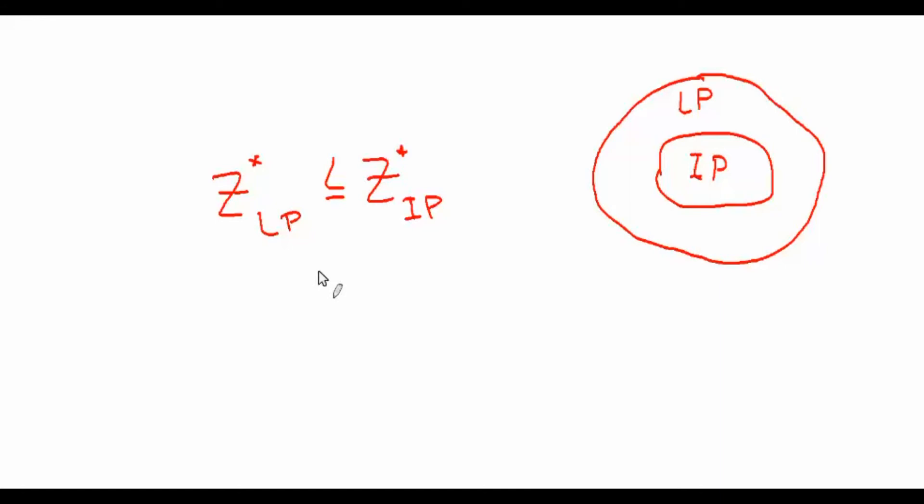Now why is this useful? It's useful in terms of verification. Suppose you solve the IP version and then you solve the LP relaxation.